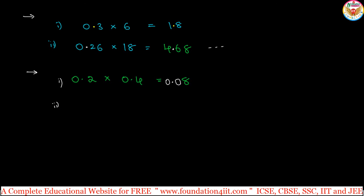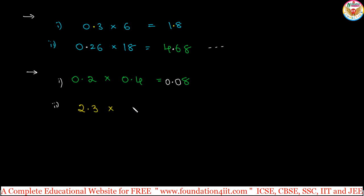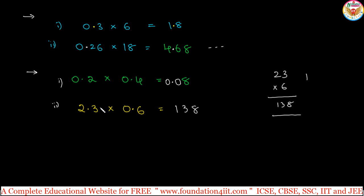Another example: 2.3 multiplied by 0.6. Without decimal places, this is 23 multiplied by 6 using the normal method: 6 into 3 is 18, carry 1; 6 into 2 is 12, plus 1 is 13. So the answer is 138. Now, after the decimal point: 1 decimal place from 2.3 and 1 from 0.6 — total 2 decimal places. From the right side, leave 2 places and put the point: 2.3 into 0.6 equals 1.38.